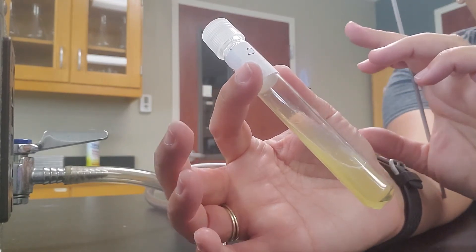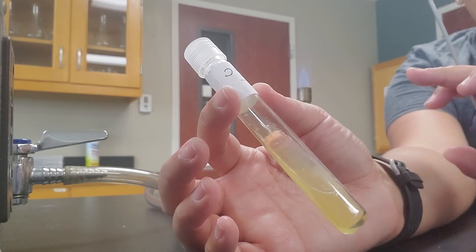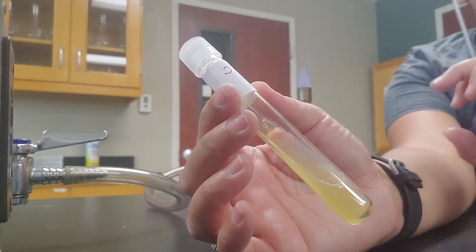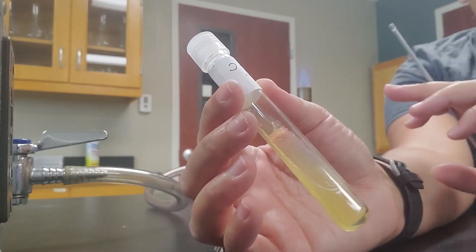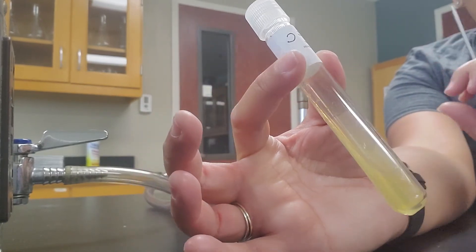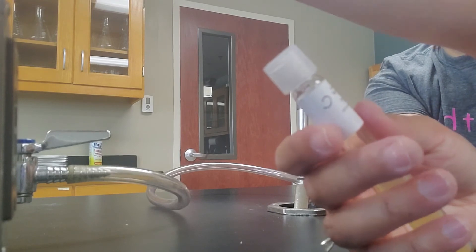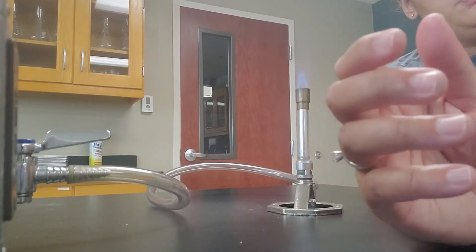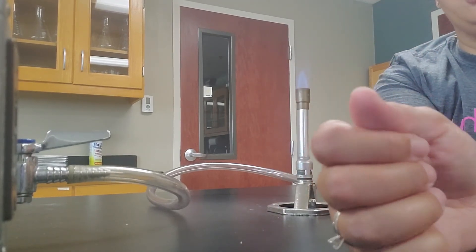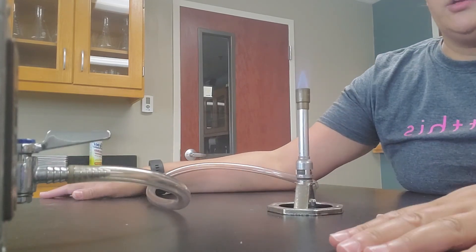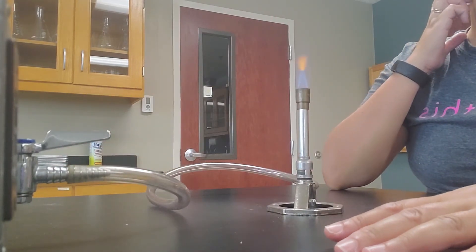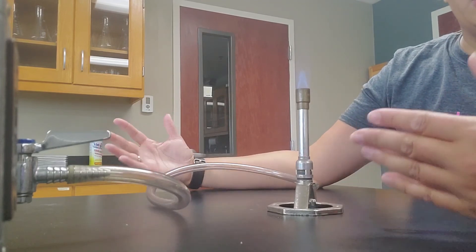And same thing, aseptic technique, you're going to flame your loop initially. You're then going to flame the tops of the tubes, take a sample, transfer it. Once again, reflame the loops, cap them, and then reflame your loop. And then you are done. So the whole purpose is that aseptic transfer. The aseptic transfer is just making sure that you're not going to go ahead and transfer any unwanted bacteria.